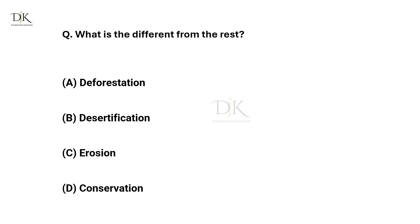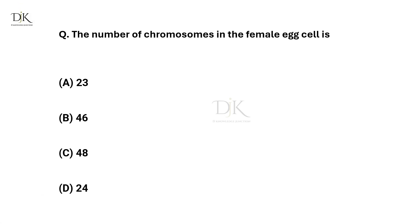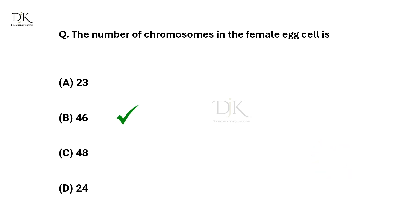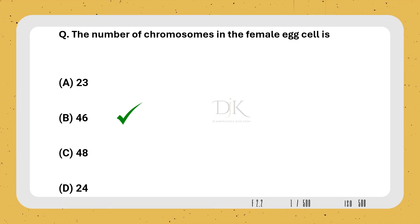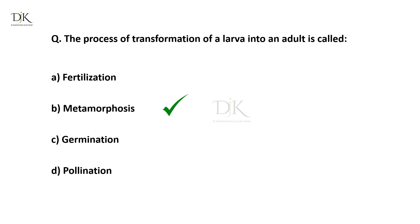What is the difference from the rest? The right answer is Conservation. The number of chromosomes in a female egg cell is? The right answer is 46. The process of transformation of a larva into an adult is called? The right answer is Metamorphosis.